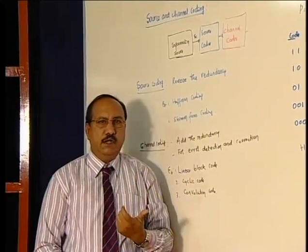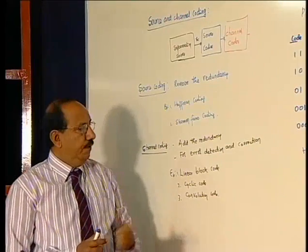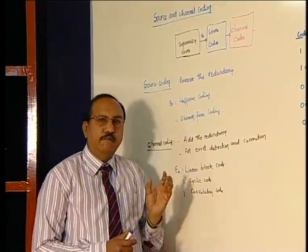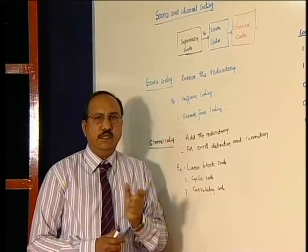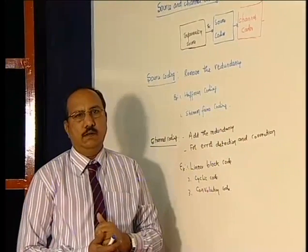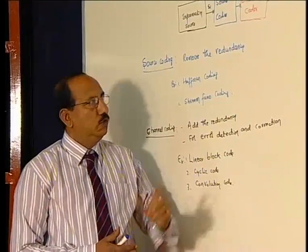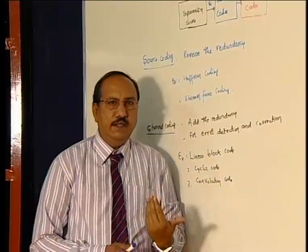So to make error-free reception, intentionally for transmitted data we are going to add a prefix code or some sort of codeword which helps in detection and correction of the received codeword. So such codewords are linear block code, cyclic code, and convolution code. So here I am going to add redundancy.